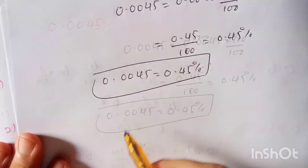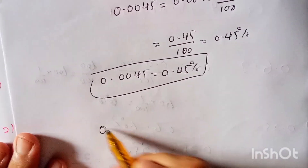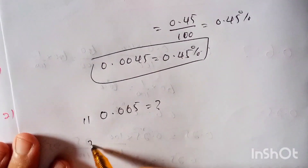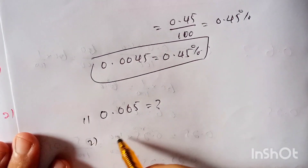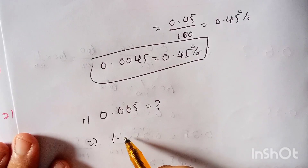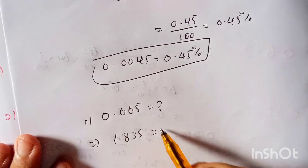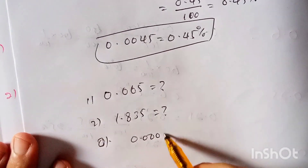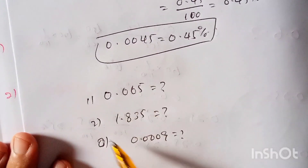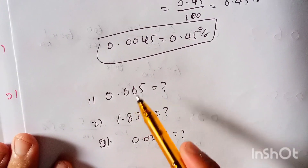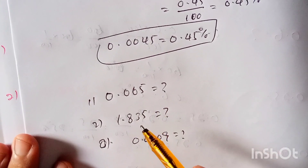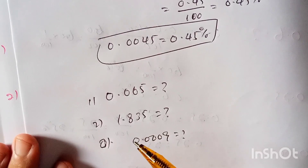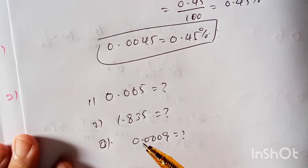That gives us 0.45 percent, so 0.0045 is equal to 0.45 percent. That is the final answer. Now here are some practice questions: what is 0.065 in percentage, what is 1.835 in percentage, and what is 0.0009 in percentage? Write your answers in the comments. Thank you for watching — please subscribe to our YouTube channel for more videos related to mathematics.